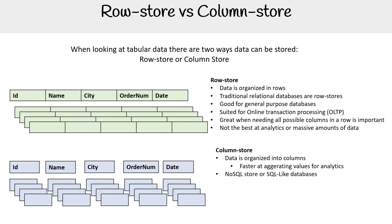These are generally NoSQL stores or SQL-like databases. It's a bit confusing because you'd think tabular data is just relational databases, but for column store they're basically NoSQL stores — the terms are a bit fuzzy. Column store is great for vast amounts of data: we're talking millions and millions of records, terabytes worth of data.